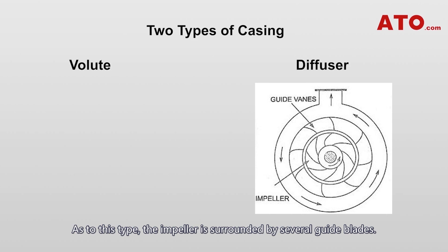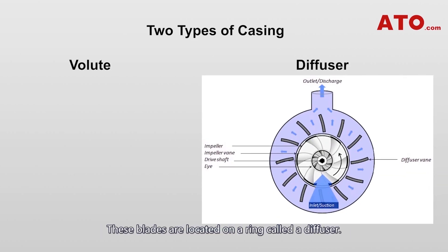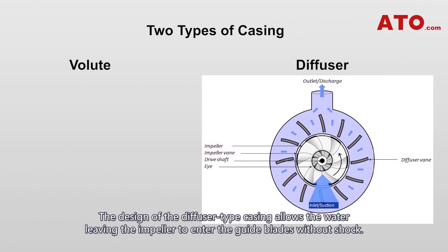In the diffuser type casing, the impeller is surrounded by several guide blades. These blades are located on a ring called a diffuser. The design of the diffuser type casing allows the water leaving the impeller to enter the guide blades without shock.